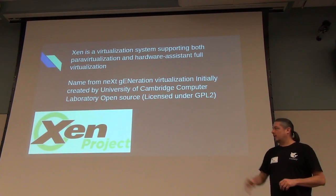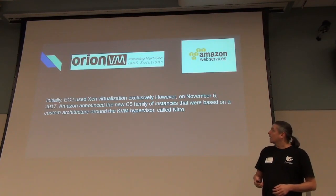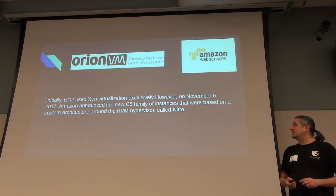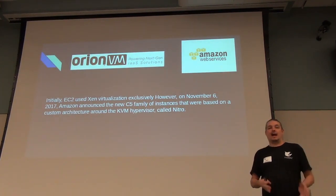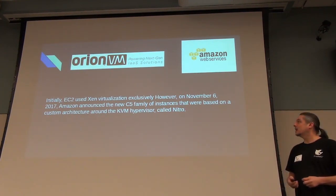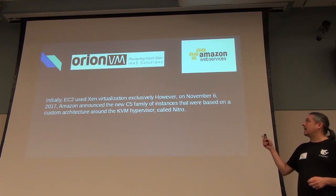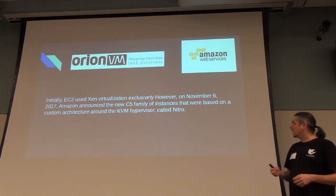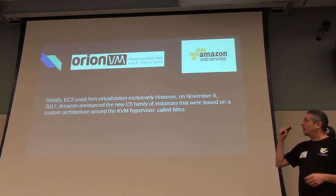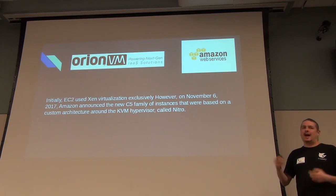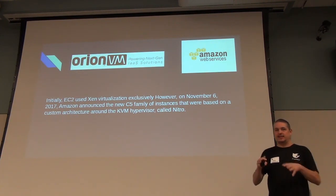This is where it all started with the Xen project. As for who uses it, Amazon until November 2017 was 100% based on the core of the Xen open source project and hypervisor that runs all their EC2 instances. They did change their C5 compute instances to a special KVM hypervisor called Nitro. Orion VM hosting is another large user that used XenServer as its core before switching to KVM.